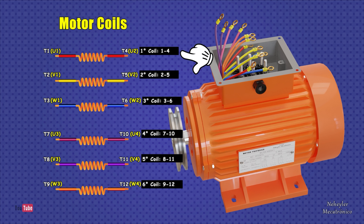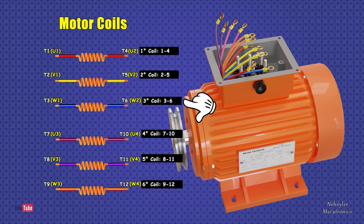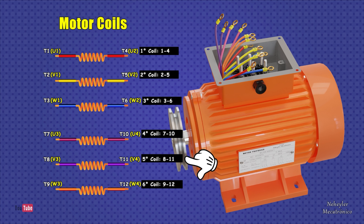The first coil is designated terminals 1 and 4. The second coil is designated with terminals 2 and 5. The third coil is designated with terminals 3 and 6. The fourth coil is designated with terminals 7 and 10. The fifth coil is designated with terminals 8 and 11. The sixth coil is designated with terminals 9 and 12.